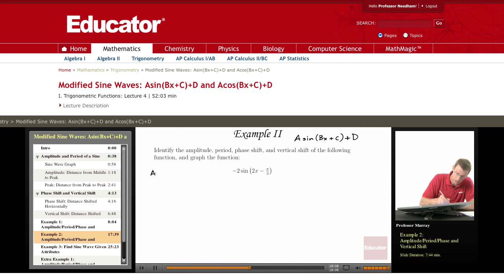So amplitude, that's the A, or if the A is negative, you make it positive. So that's the absolute value of A, which is just 2 here.